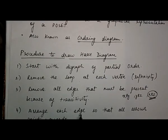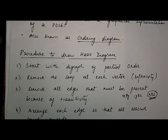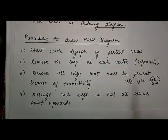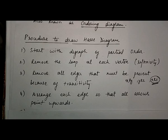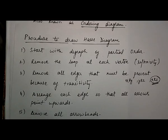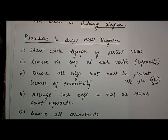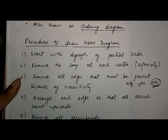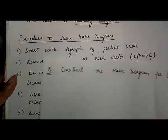The next step is to arrange each edge so that all arrows point upwards. After removing the reflexive and transitive properties, we arrange all edges pointing upward. Finally, we remove all the arrowheads and represent all the nodes with a point. Now let's take one example and construct the Hesse diagram using this procedure.